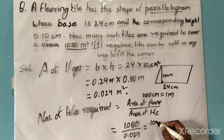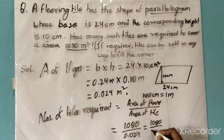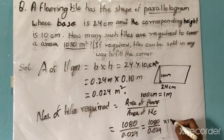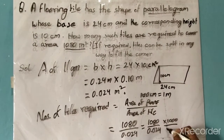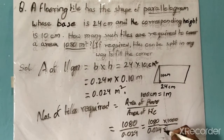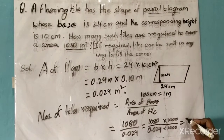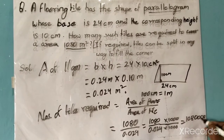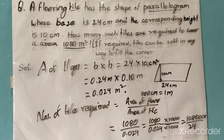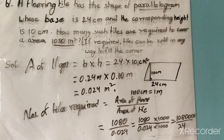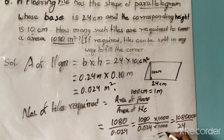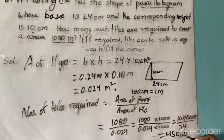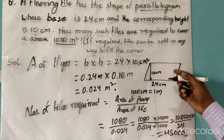Multiplying both numerator and denominator by 1000, we get 1080 into 1000 divided by 24, which gives us 1,080,000 divided by 24. On solving this, we find the answer is equal to 45,000. This is the number of tiles required to fill the flooring area of 1080 square meters.